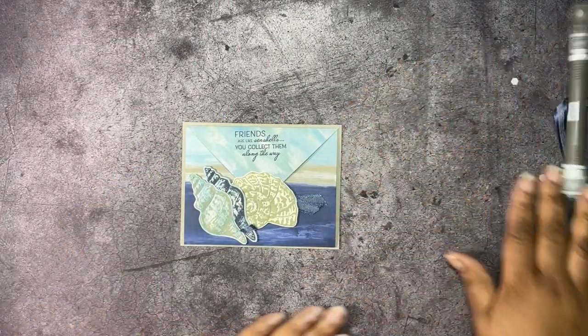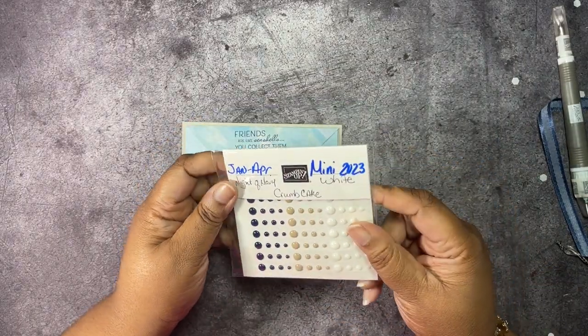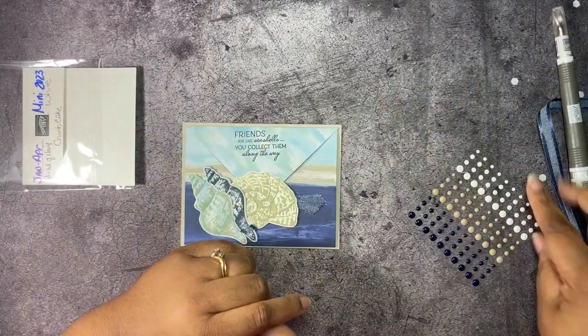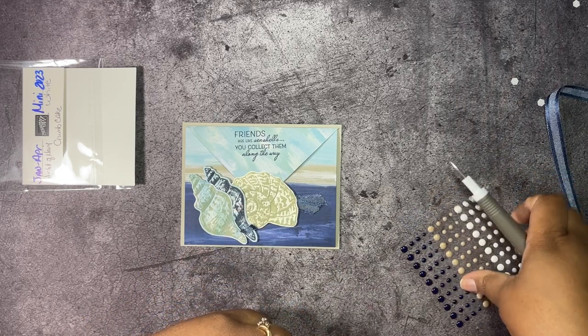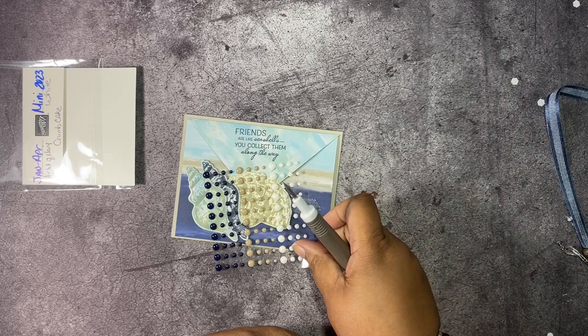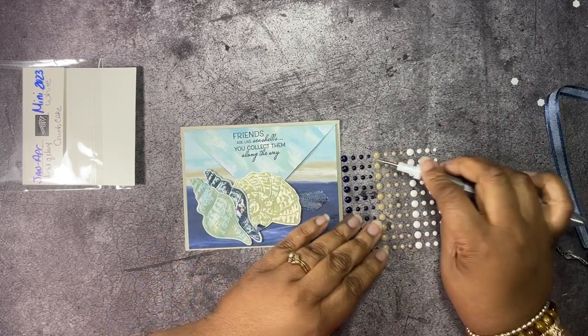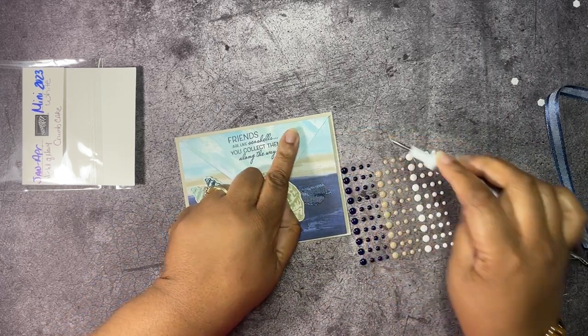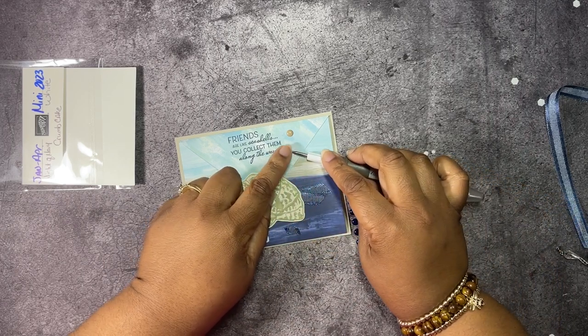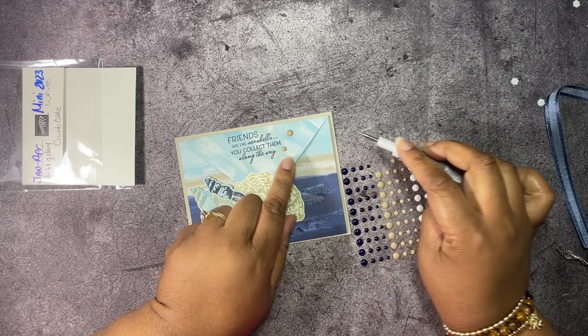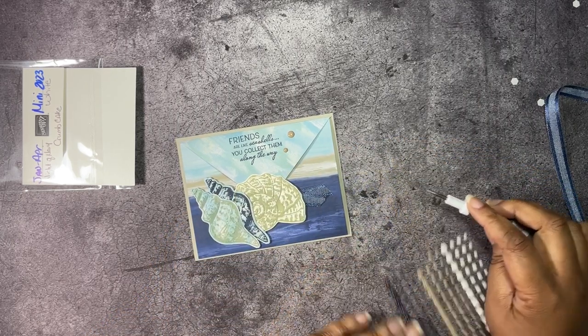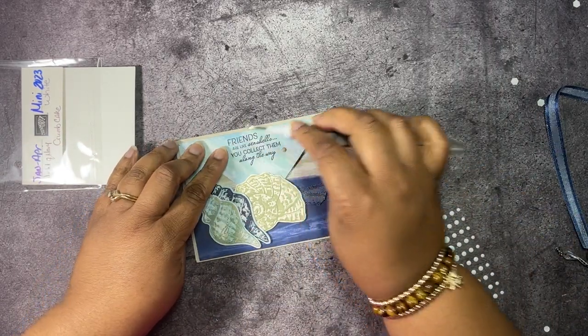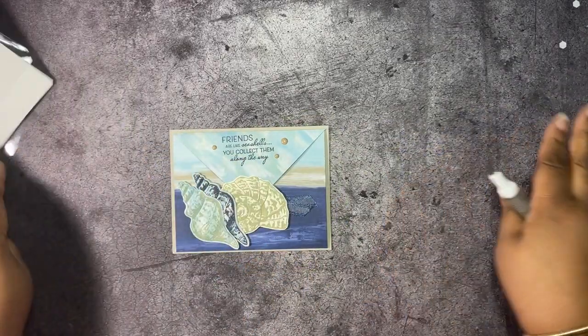Lastly we are going to add some of our enamel dots essentials to our card front. Which colors should I use? I have a lot of blue going on, so let's use some of the crumb cake. I'll put one there, one here, right there, and then we'll put one more right over here. Isn't that cute?